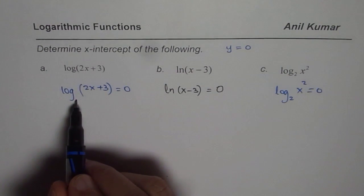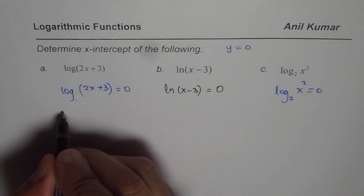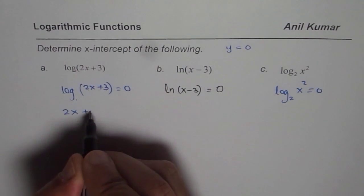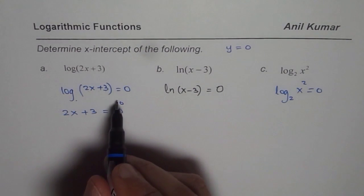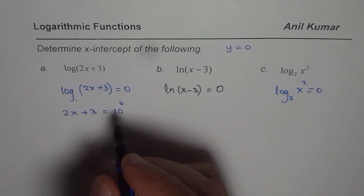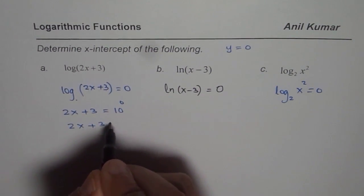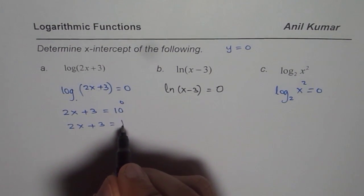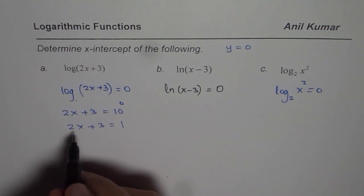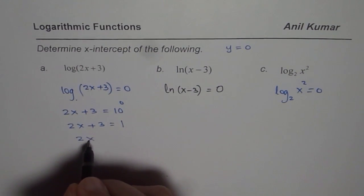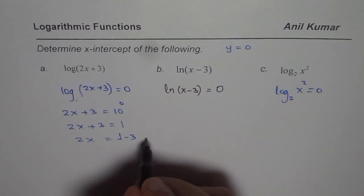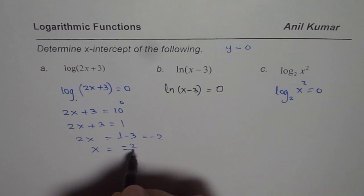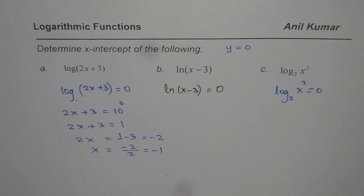Let us solve them one by one. When I say log to the base 10 of 2x plus 3 equals to 0, that means 2x plus 3 equals to 10 to the power of 0. Convert that to exponential form. From here you know 2x plus 3 should equal 10 to the power of 0 which is 1. Anything to the power of 0 is 1. Now you can solve for x. We say 2x equals 1 minus 3 which is minus 2, and x equals minus 2 divided by 2 which is minus 1.